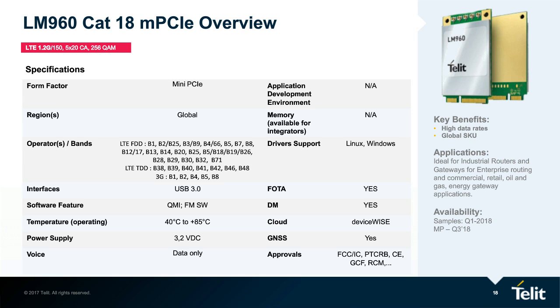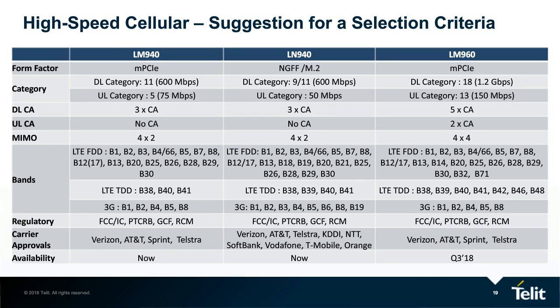This is a way to see the major features in one shot. The LN940 is another CAT 11 or 9 depending on software configuration, in an M.2 form factor. The MIMO in this case is 4x2, and carrier aggregation is 3x. The LM960, apart from its broader band configuration, is up to 4x4 MIMO and 5 carrier aggregations.